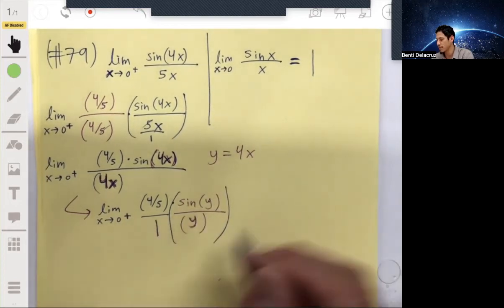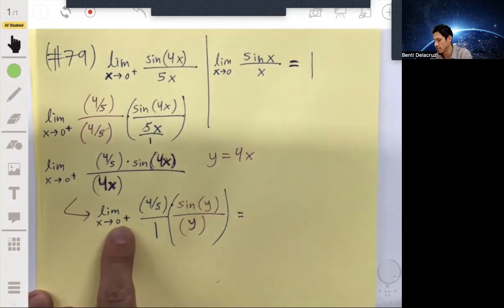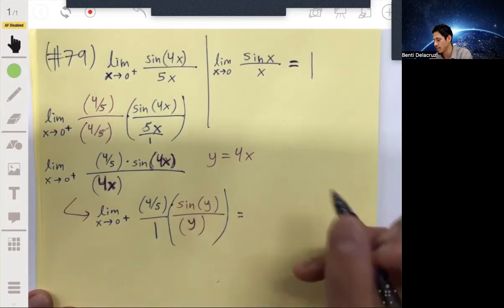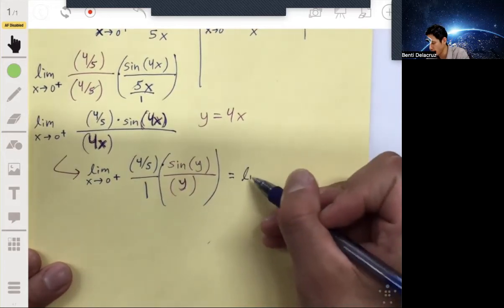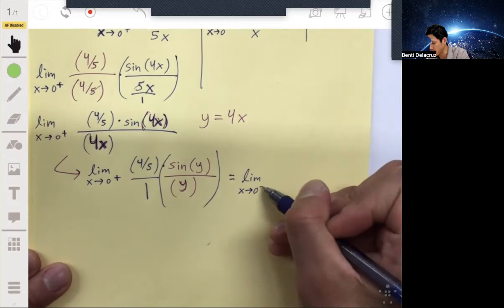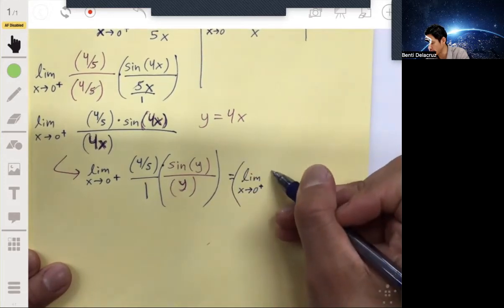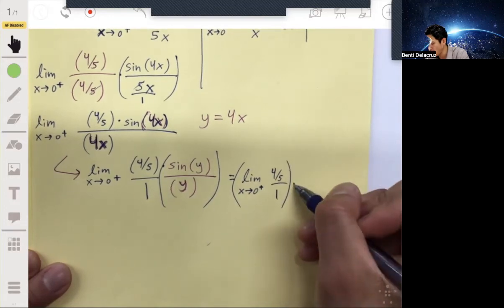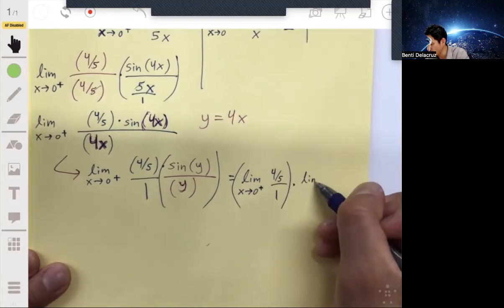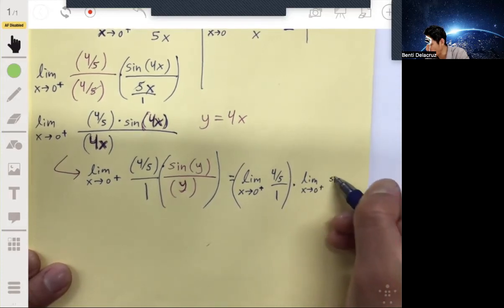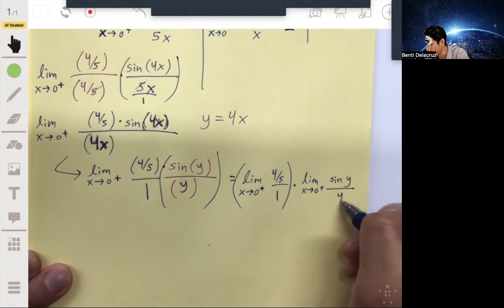So then this becomes just the limit as x approaches zero from the positive side of four-fifths times the limit as x approaches zero from the positive side of this. If we want to write this correctly, because some professors and teachers are really going to be strict about this, we would write it like this: as two limits being multiplied by one another. Limit of four-fifths over one times the limit as x approaches zero from the positive side of sin(y) over y.